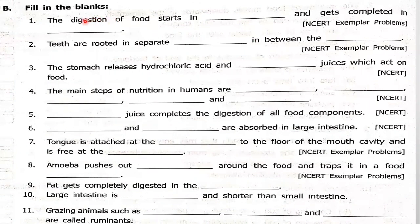First question: the digestion of food starts in DASH and gets completed in DASH. The digestion of food starts in the mouth and gets completed in the small intestine. Even though the last part of the digestive system is the large intestine, only the absorption of water and some salts takes place there. All digestion gets completed in the small intestine. So the first answer is mouth and the second is small intestine.